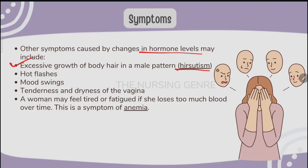Other symptoms include hair growth in unusual places — excessive body hair in male patterns for females. Hot flashes, mood swings, tenderness and dryness of the vagina (tenderness meaning pain to touch) are also symptoms. A woman may feel tired or fatigued if she loses too much blood over time. These are the hormonal symptoms associated with abnormal uterine bleeding.